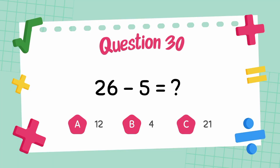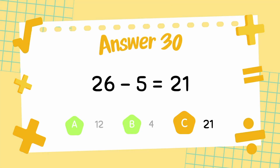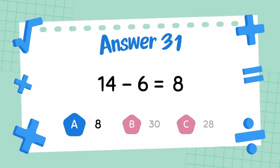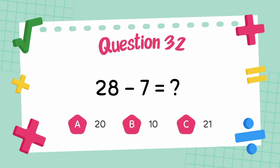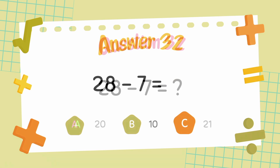What is 26 minus 5? The answer is 21. What is 28 minus 6? The answer is 21. What is 28 minus 7? The answer is 21.